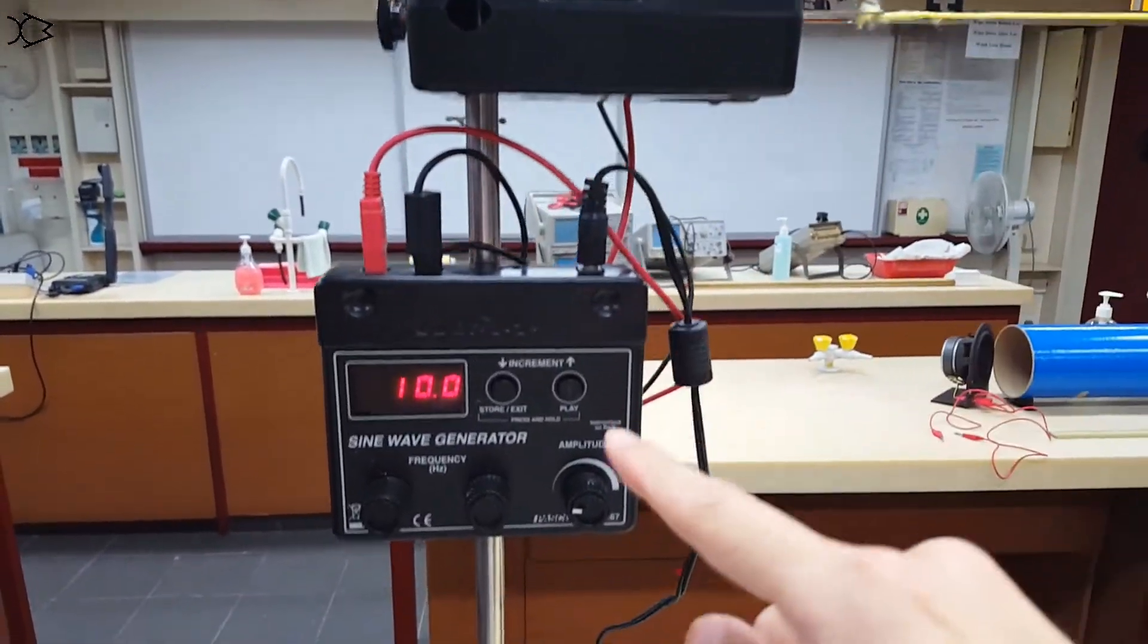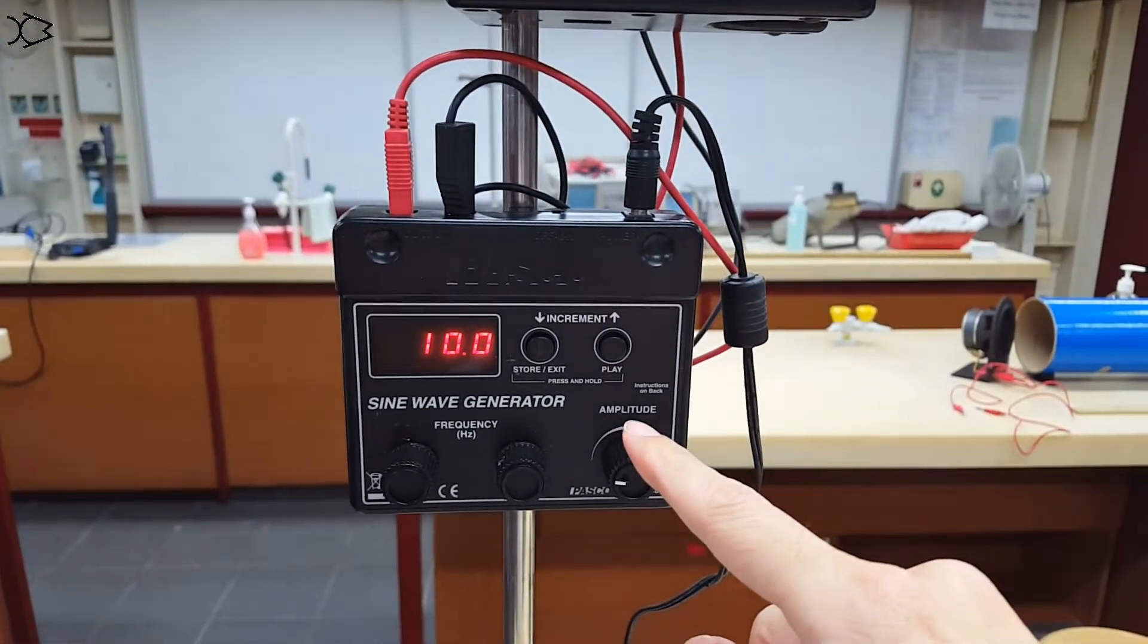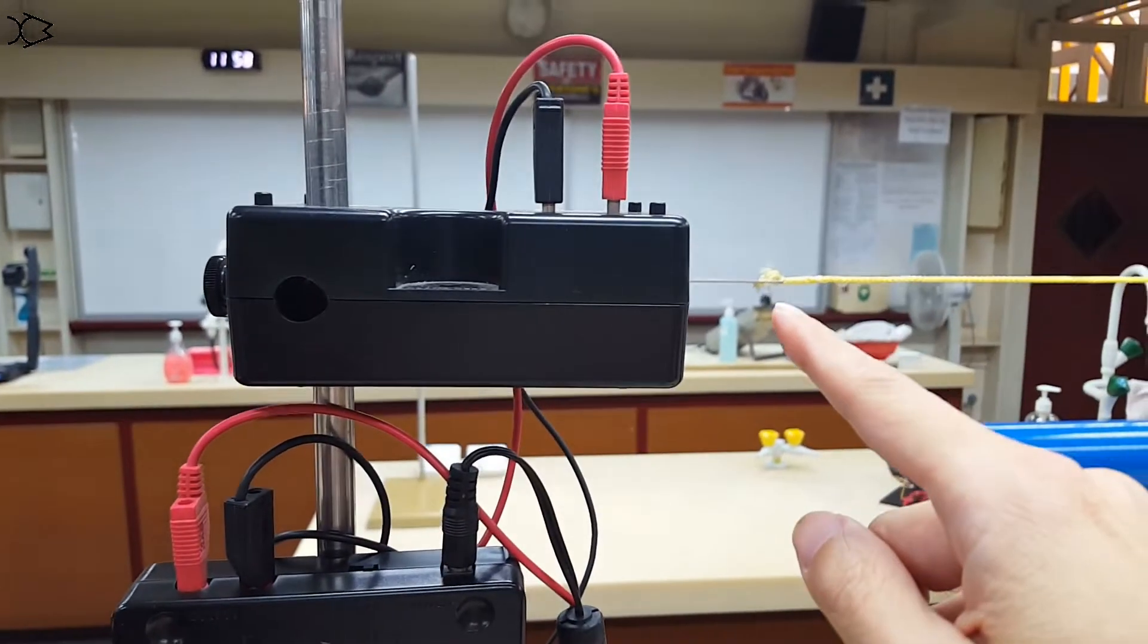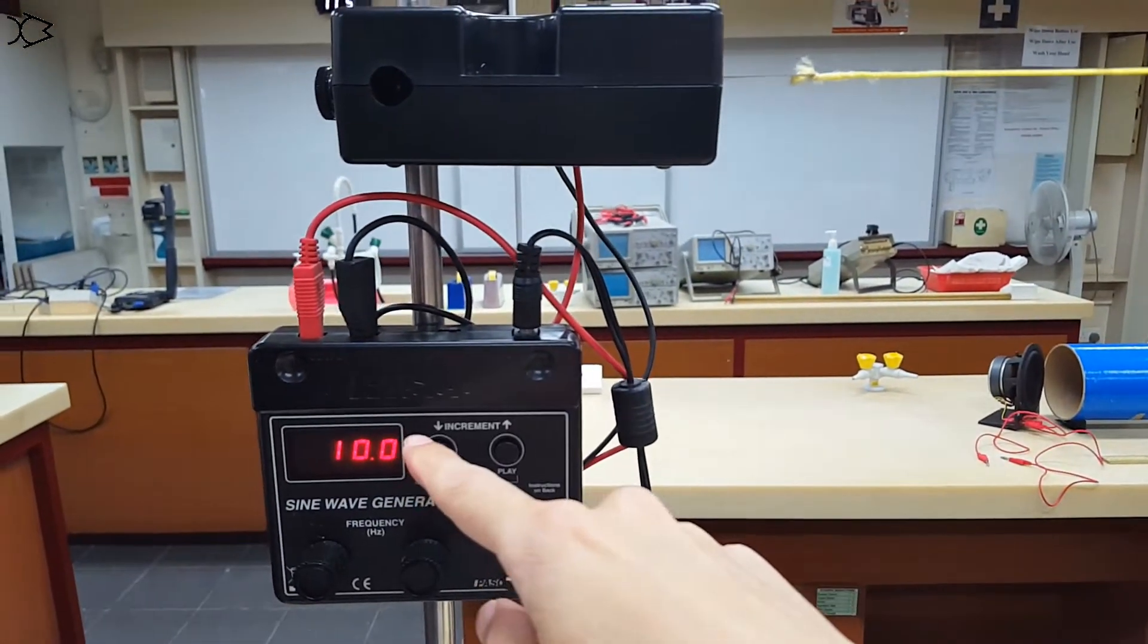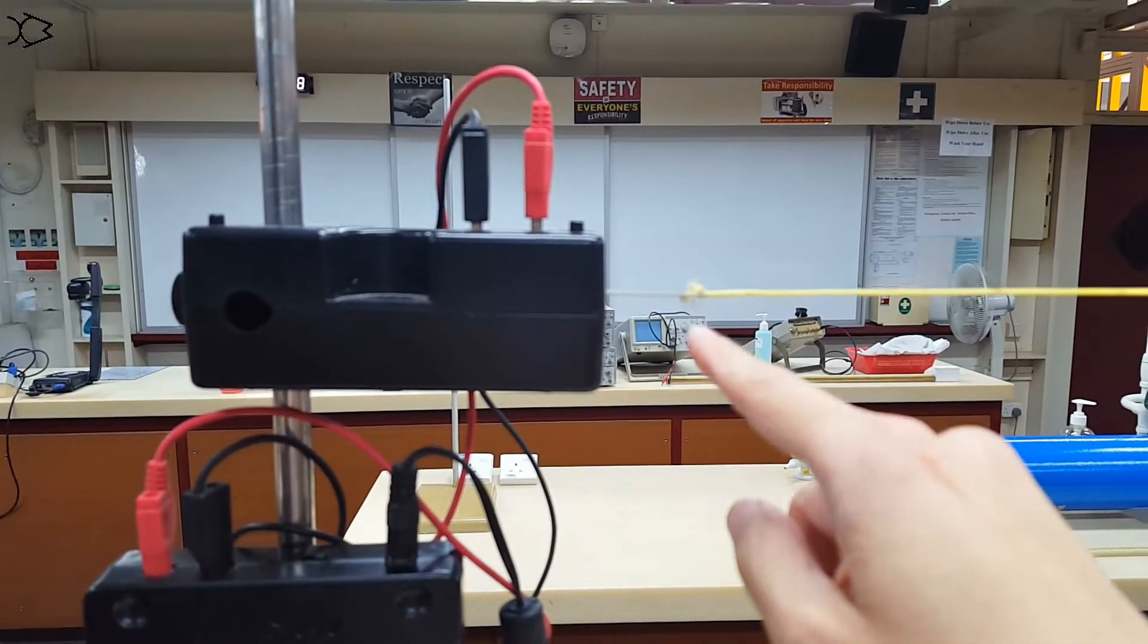The vibrator is connected to a signal generator, so I can control the frequency of the vibration. As you see, the current is set to 10 Hz. So this vibrator is vibrating at 10 Hz.